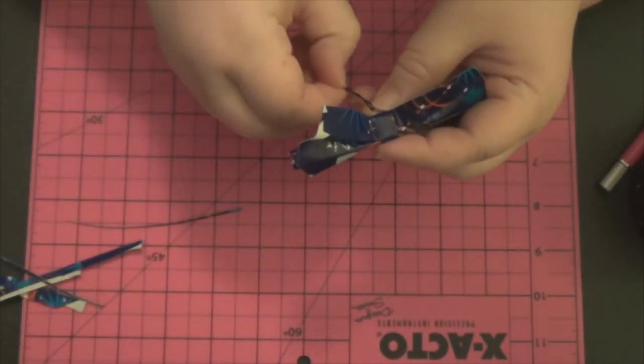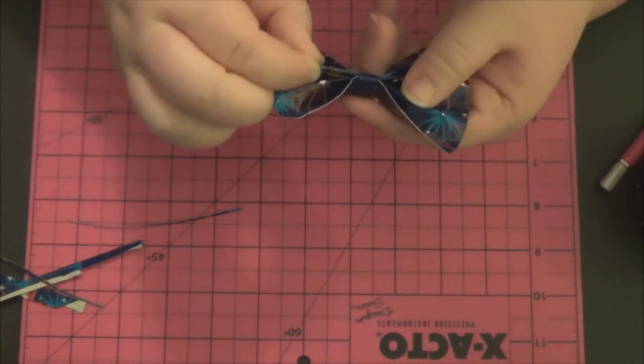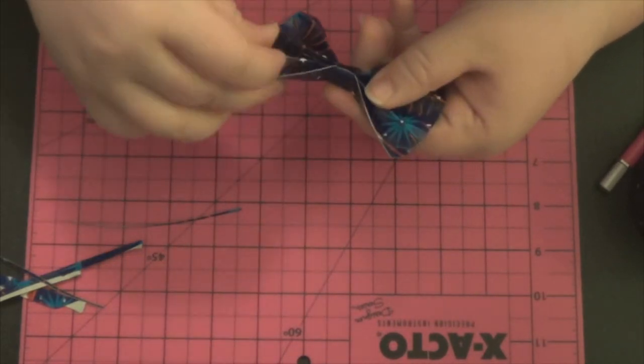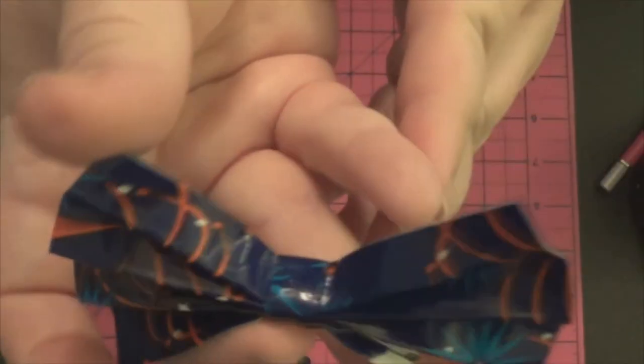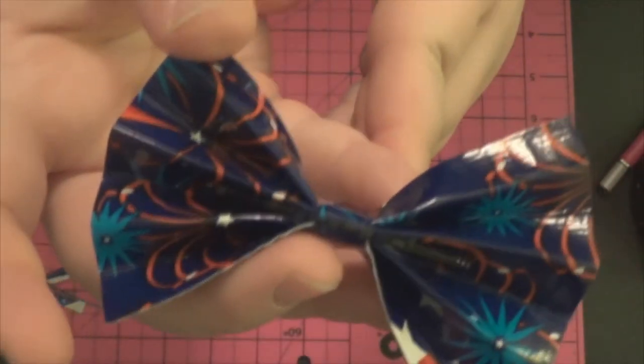Then I'm going to take that bobby pin and I'm just going to slide it through the middle whether I do it on the bad side or the good side. You choose which side you want to do it on. And then your duct tape bow is basically ready to go.